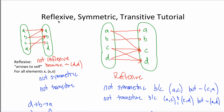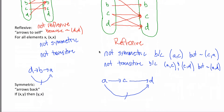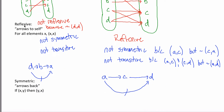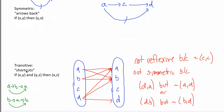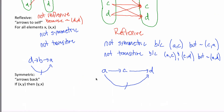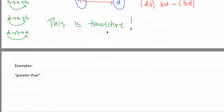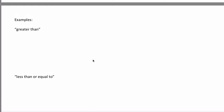Here's part two of my tutorial on the reflexive, symmetric, and transitive properties. In part one, I talked about these properties kind of abstractly — how the reflexive property means you need an arrow to itself, the symmetric means you need arrows back, and the transitive property means this idea of shortcuts. If you just need general help on reflexive, symmetric, and transitive, watch that video. If you watched that video and you kind of get it but could use a couple more concrete examples, you're in the right spot.